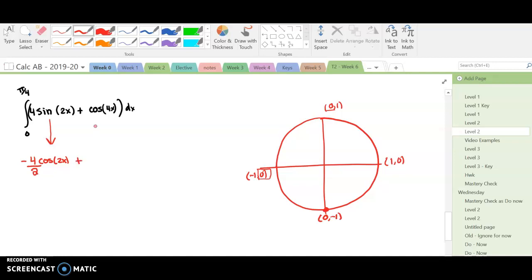Plus the integral of cosine is sine, so we're going to have one-fourth sine of 4x, all of this evaluated from 0 to π over 4. And this 4 over 2 is the same as 2, we'll simplify that.